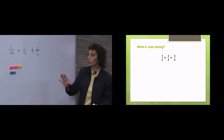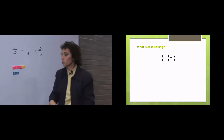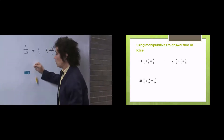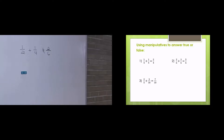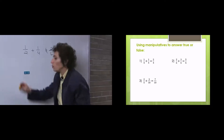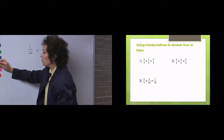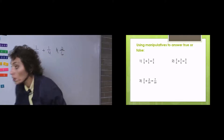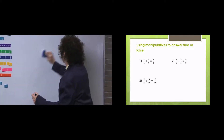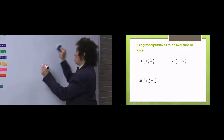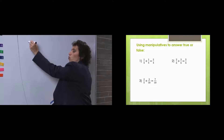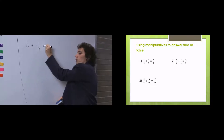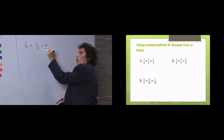But before we do that, let's just take a look at some of the next problems so we can understand this a little better. The first problem is one fourth plus one fourth equals two fourths.